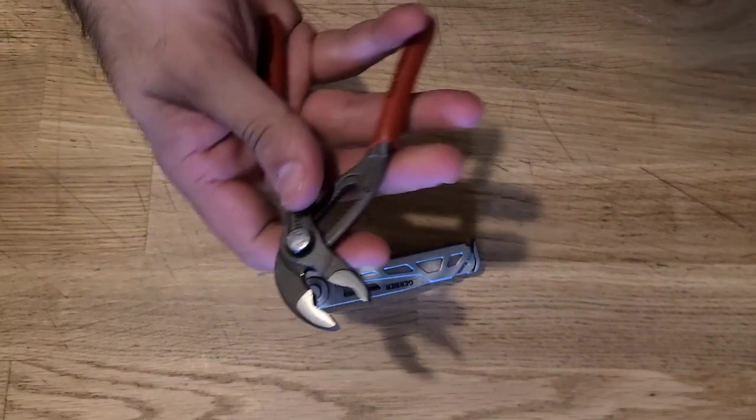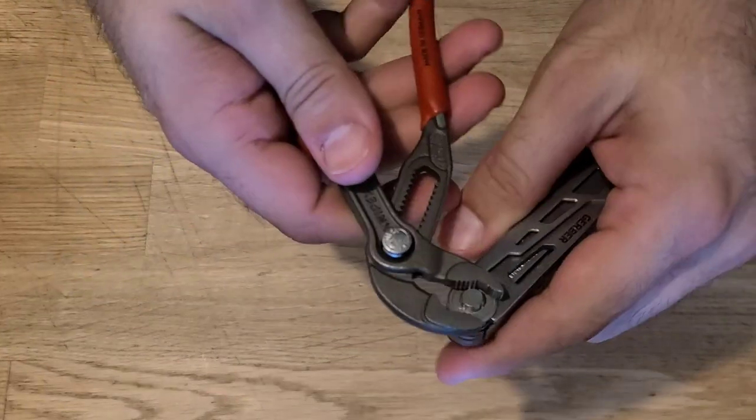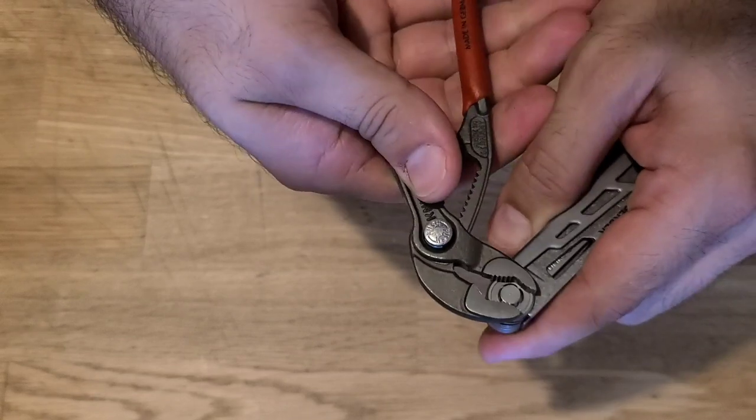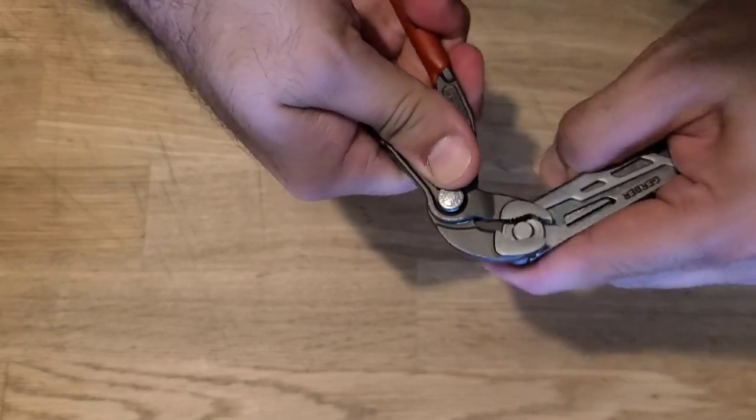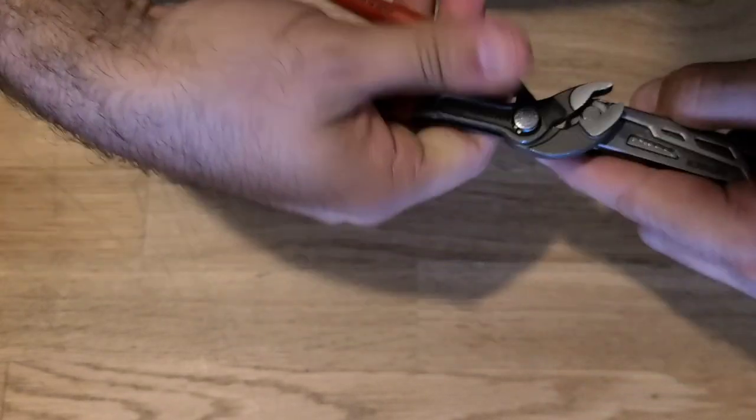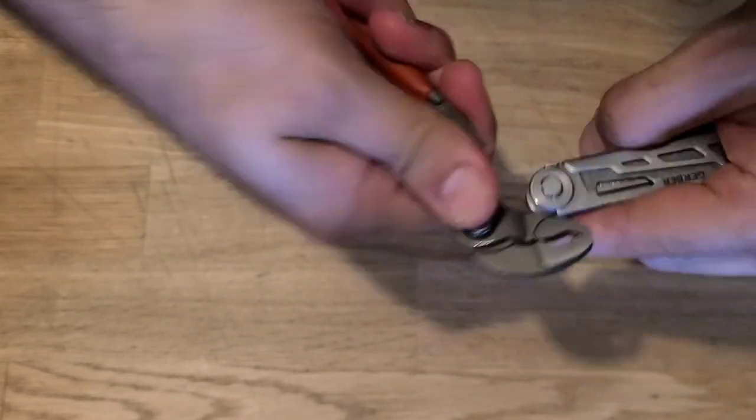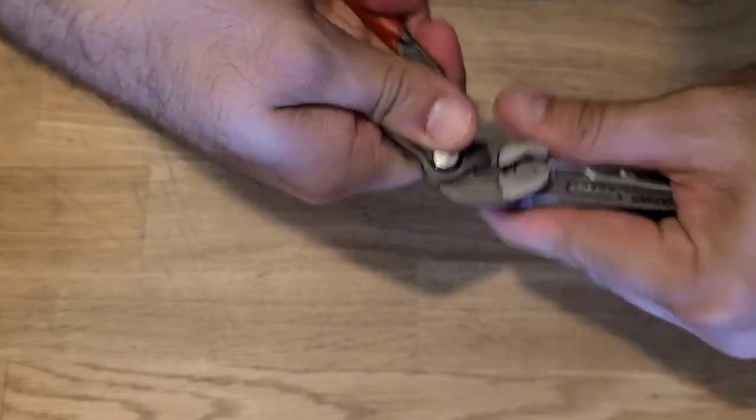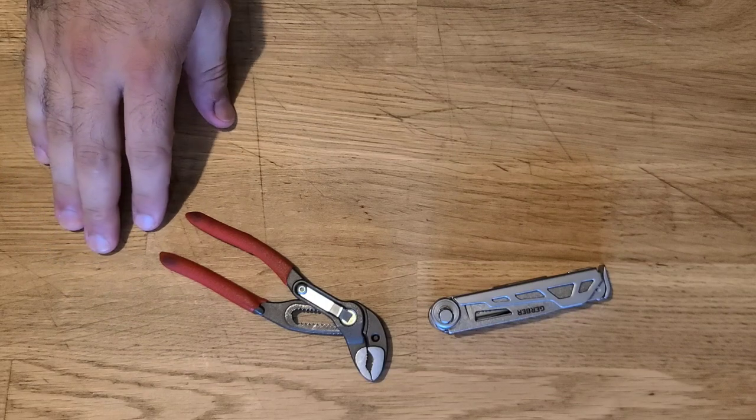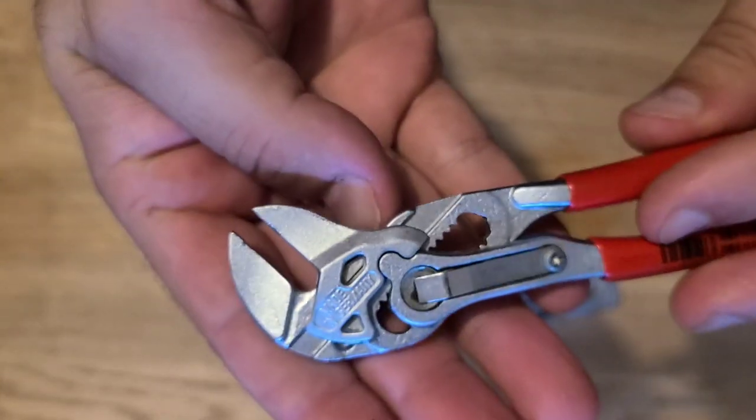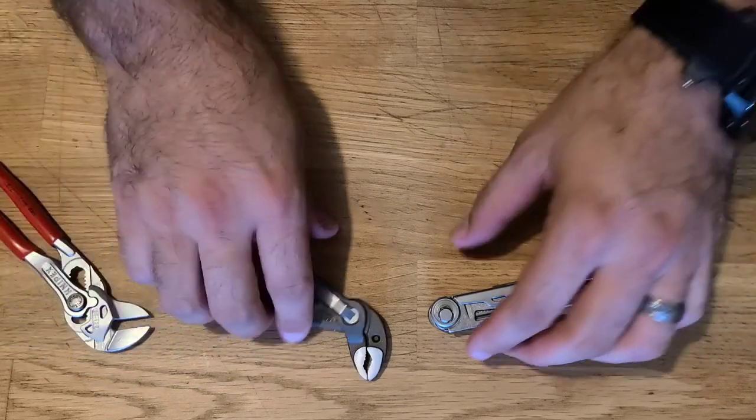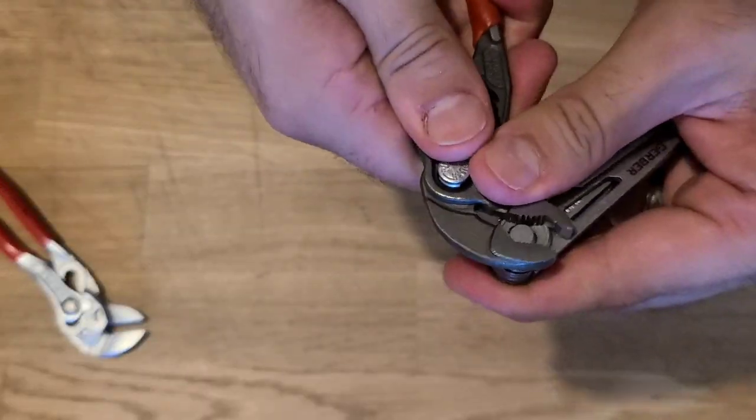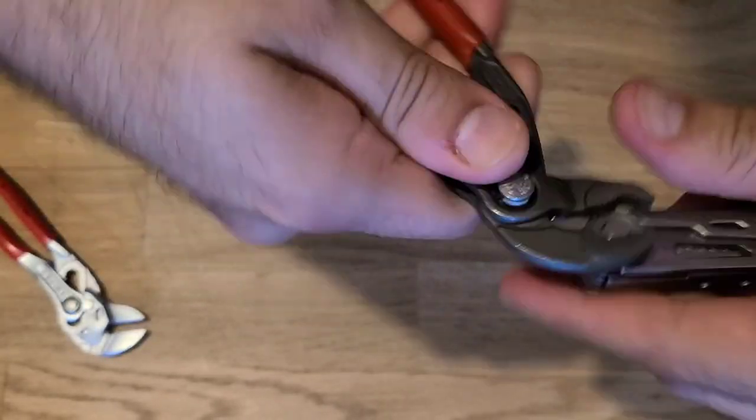So we got my Knipex Cobra here. And simply since I don't care about the screw I'm going to use the Cobra instead of the plier wrench. If I was using something like a tool that I wanted to keep in good condition I would use the plier wrench because it would not mar the surface. This is a much better tool for that, but because I don't care I'd rather have more grip.